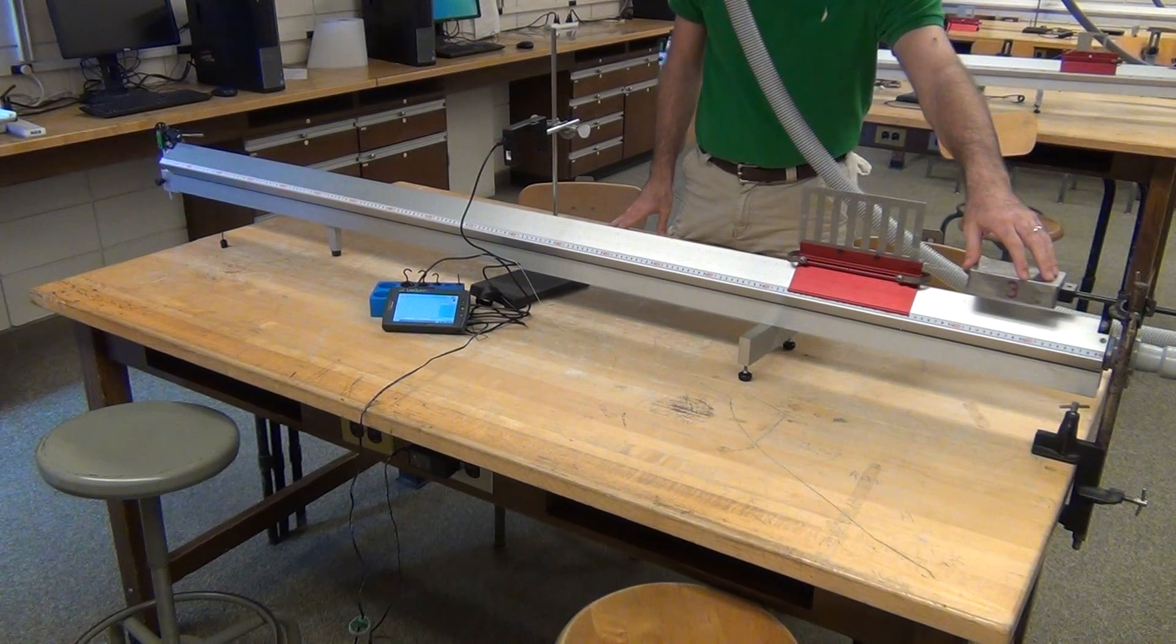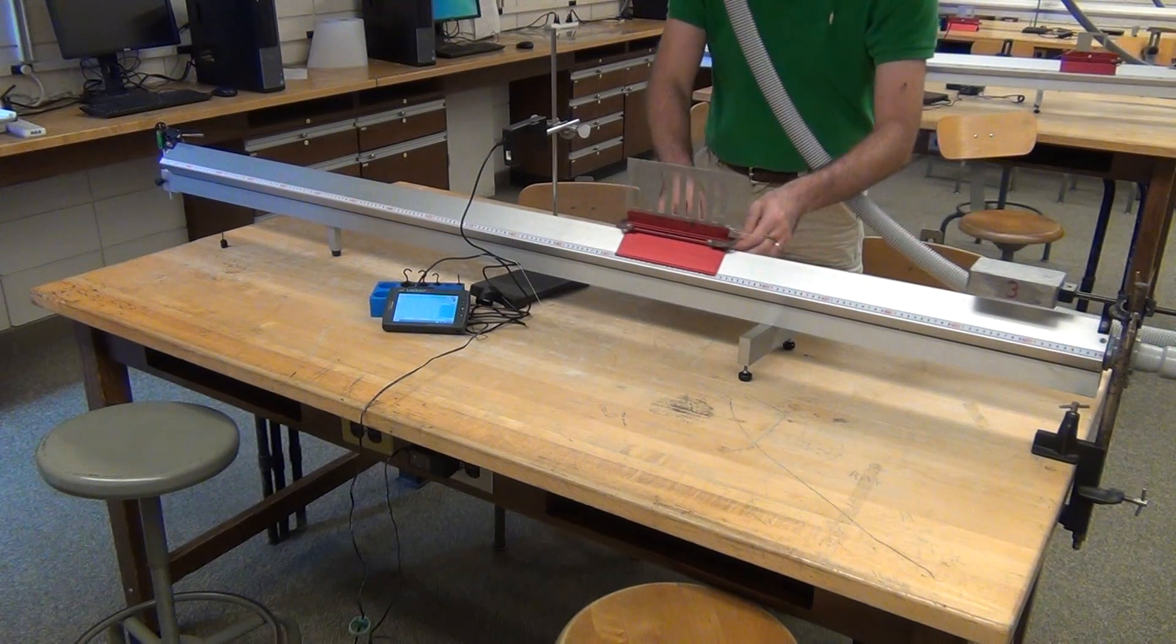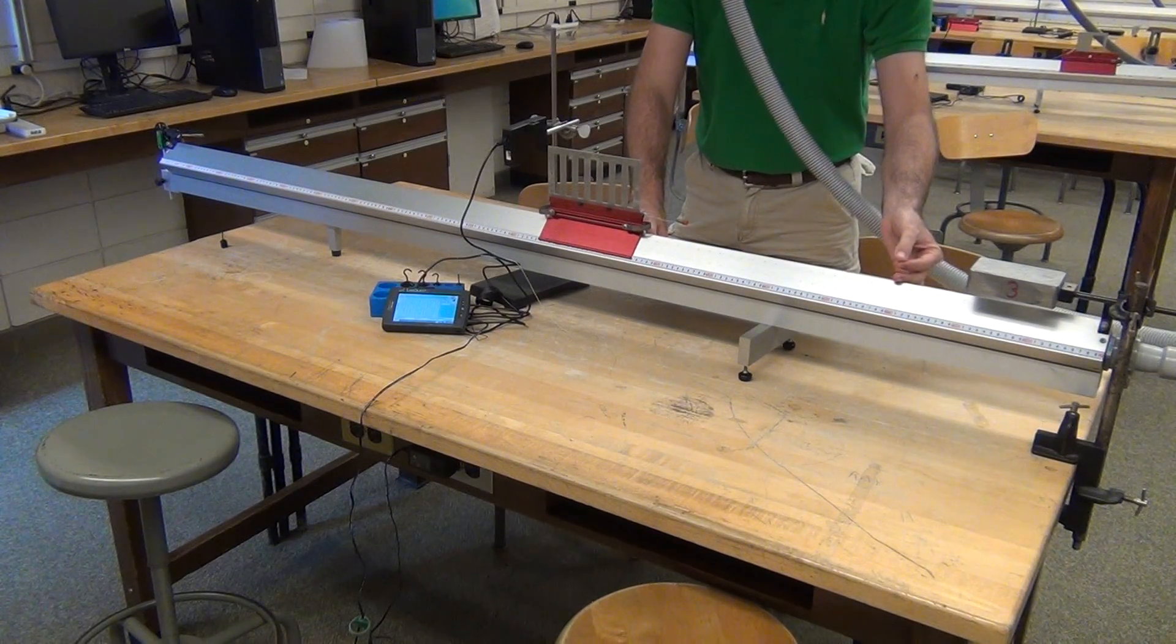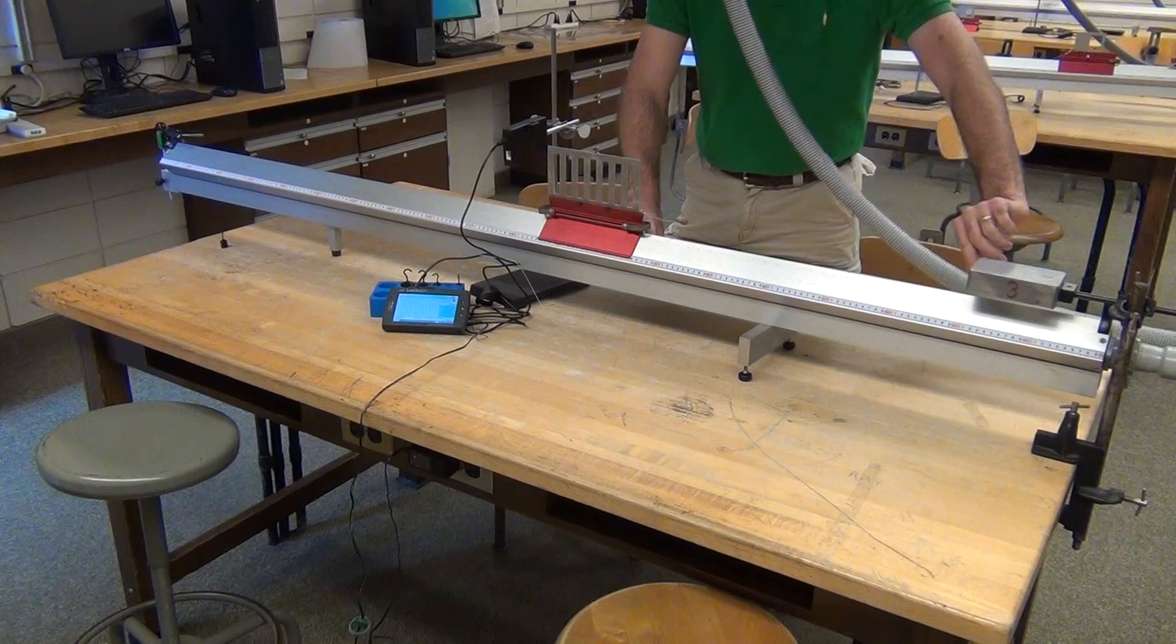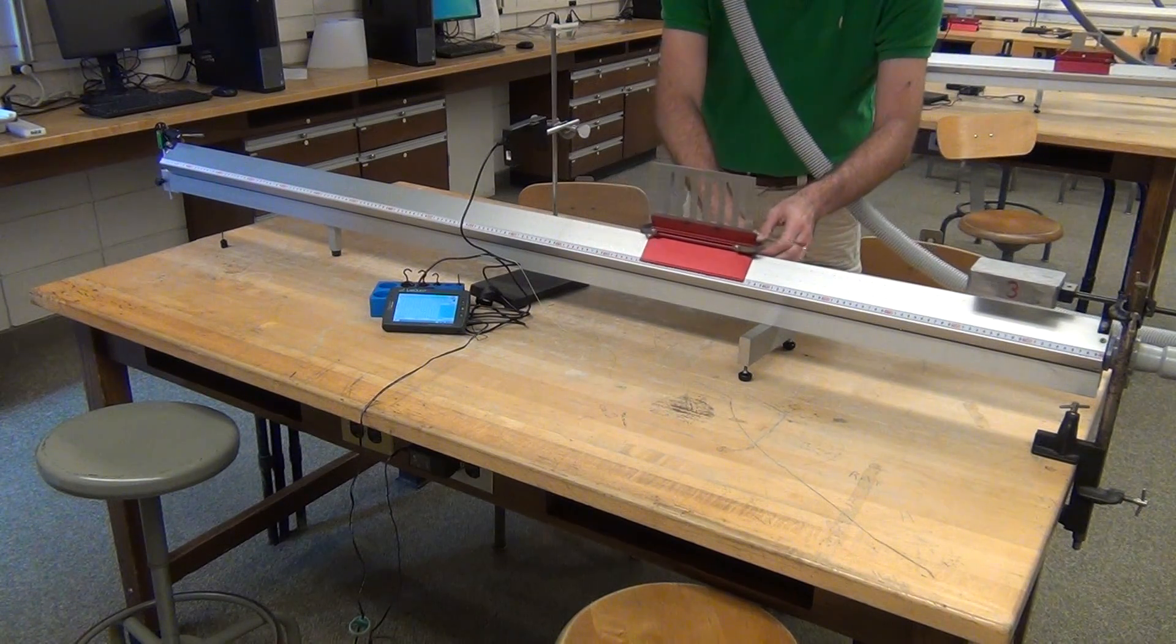You'll have the torsional spring that you calibrated, and you need to make sure that the string coming out of that torsional spring is leveled with the top of the air track and not rubbing on the entrance hole.